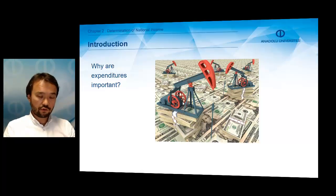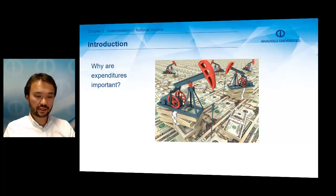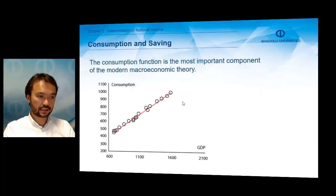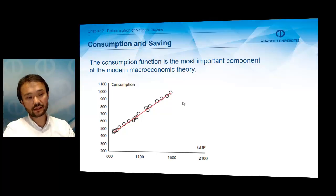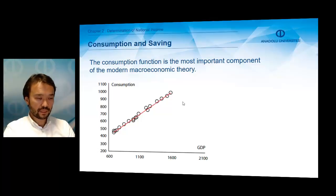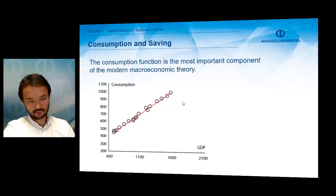To understand national income determination, we need to understand the main components of aggregate expenditures. The first and most important one is consumption. The consumption function is the most important component of modern macroeconomic theory, because consumption also means production.